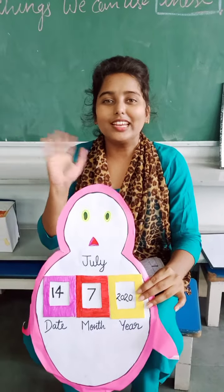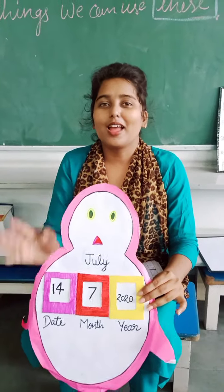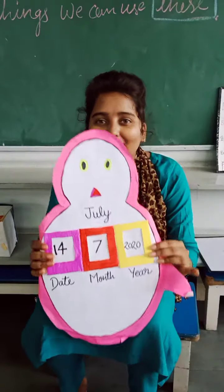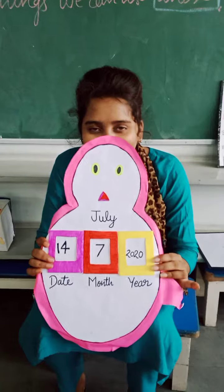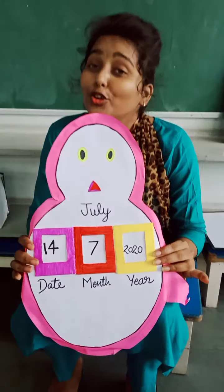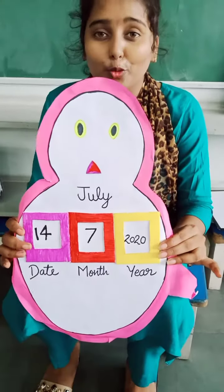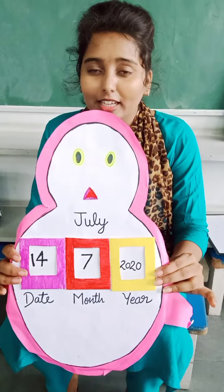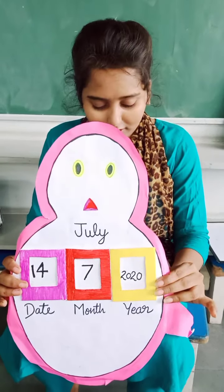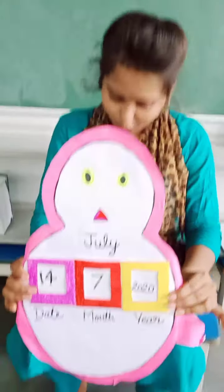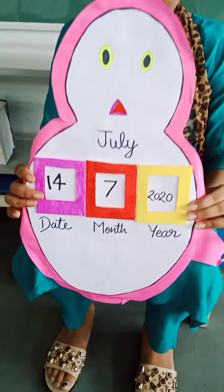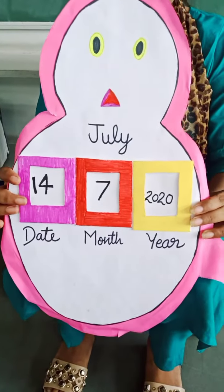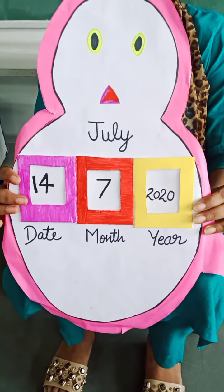Hello kids, I am Candy, I am Calendar. Today I will show you year, week, month. Okay, let's start. I have 12 months in a year.